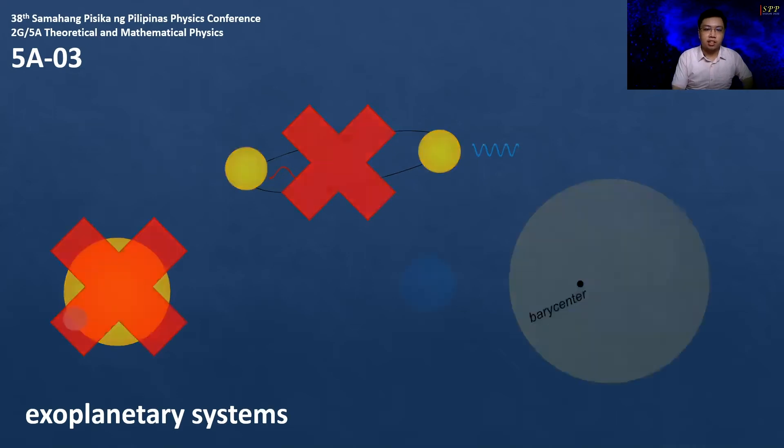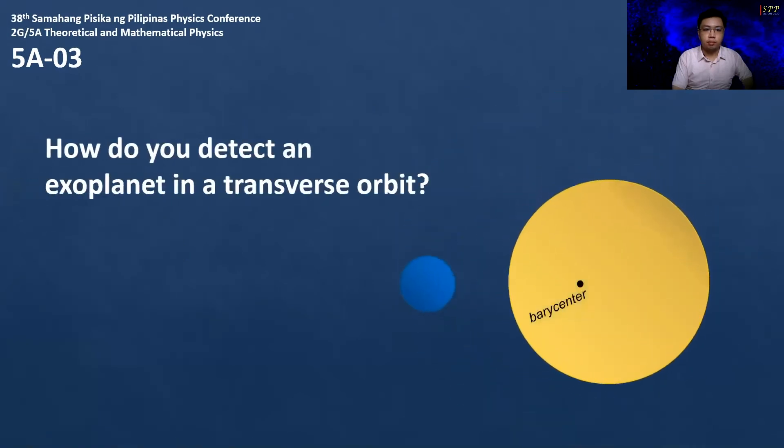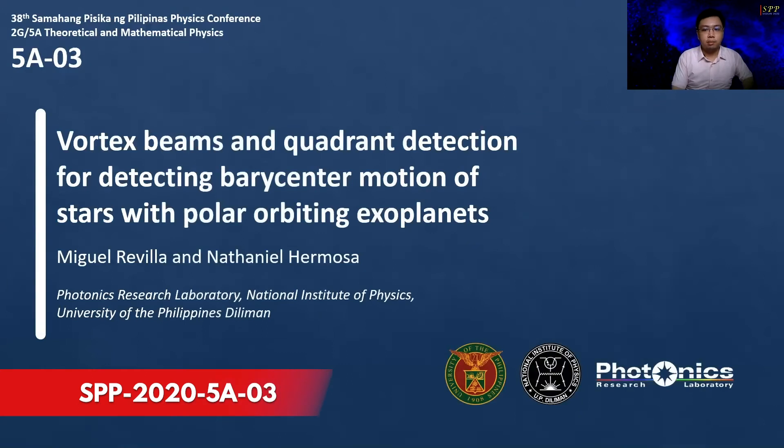Discovering exoplanets have been done primarily in two ways. One is the radial velocity method which uses the starlight Doppler shift, and second is by timing periodic planetary transits. However, what if the star exhibits no longitudinal motion and the planet does not cross the star? How do you detect an exoplanet in a transverse orbit? Hi, I'm Miguel from NIP UPD Liman, and in this video we will be looking at simulations of vortex beams to better detect transverse stellar movement.